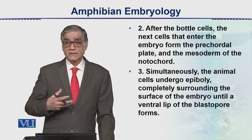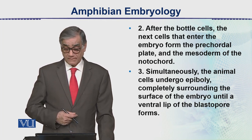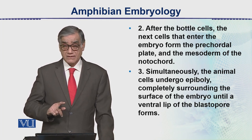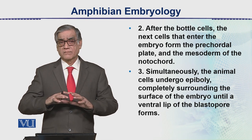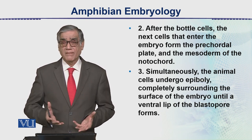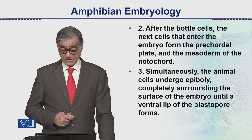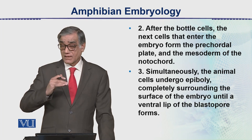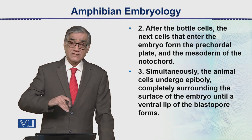After the bottle cells, the next cells that enter the embryo form the pre-chordal plate and the mesoderm of the notochord. The notochordal cells become the notochord, which is a skeletal rod in vertebrates that later develops into the vertebral column. Simultaneously, the animal cells undergo epiboly — the spreading of the micromeres over the megameres.